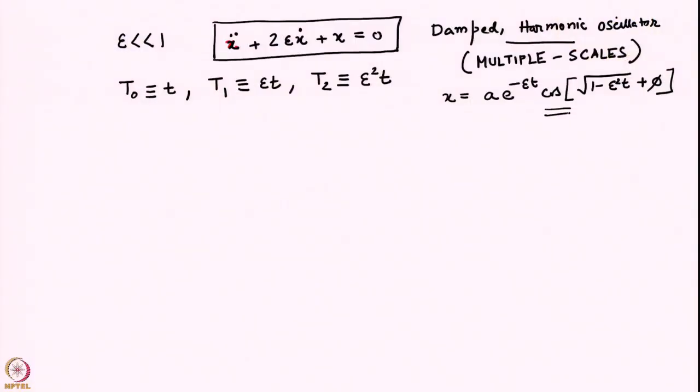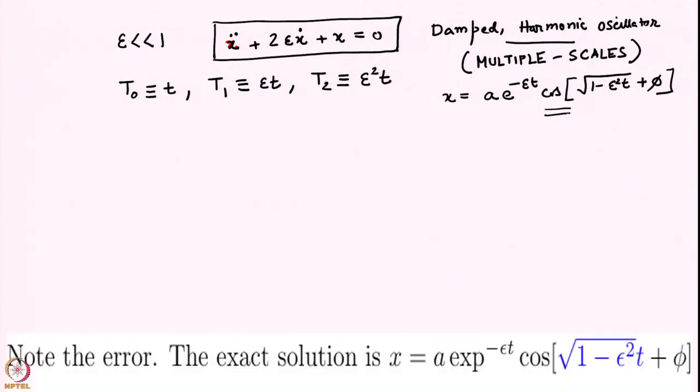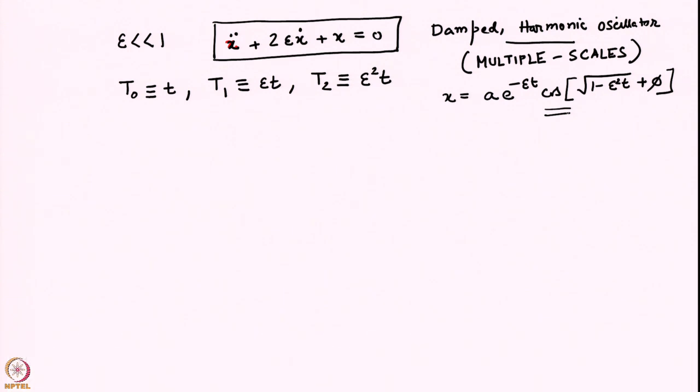We were looking at the damped harmonic oscillator and found that the solution to this linear equation for weak damping using a regular perturbation series produces secular terms similar to those encountered in our solution to the non-linear pendulum. We will introduce a more general technique — the method of multiple scales — using which we can eliminate such secular terms up to any given order.